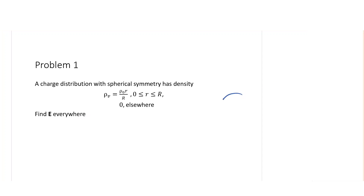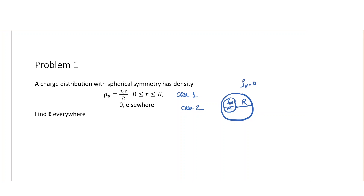You can assume a sphere having radius capital R, with this as the center. You can take it as only two cases — case 1 and case 2 — because the charge distribution is not uniform throughout. Till radius r, the charge density is ρ₀·r/R, valid only inside the sphere. Outside, the charge density is 0. So here only there is charge and outside there is no charge.